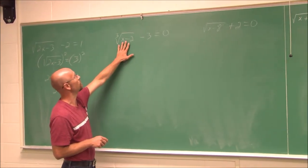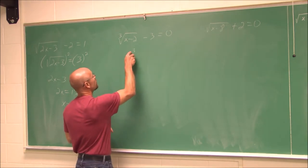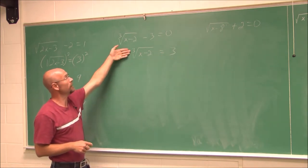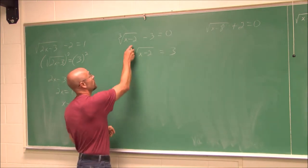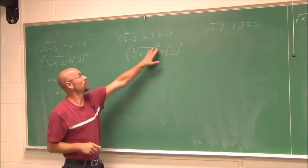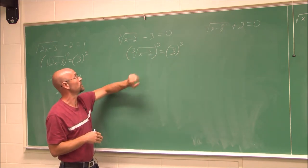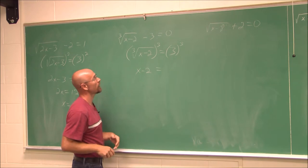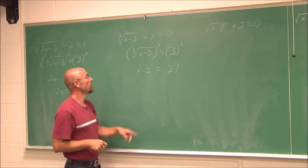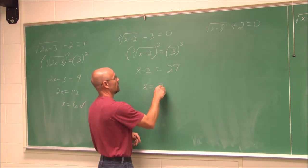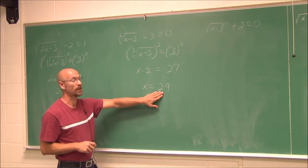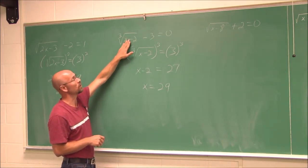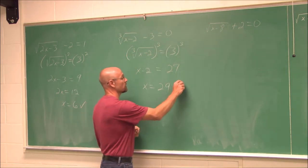Let's look at the next example. I have a radical, so I isolate it first by adding 3 to both sides, giving the cubed root of x minus 2 equals 3. My index this time is 3, so I raise both sides to the power of 3. Cubing a cubed root eliminates the radical, because 1/3 times 3 equals 1. 3 cubed is 27. Adding 2 to both sides gives x equals 29. Checking: 29 minus 2 is 27, the cubed root of 27 is 3, and 3 minus 3 is 0 — a true statement.